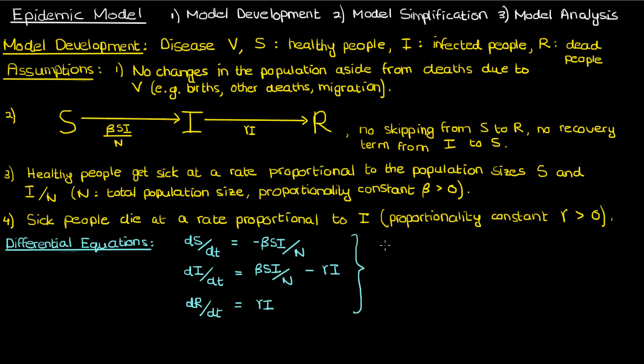So these three differential equations make up the overall model for the epidemic, and this model has a special name. It's called the SIR model or the Kermack McKendrick model, named after the people who originally proposed it. So now we've officially developed the model.